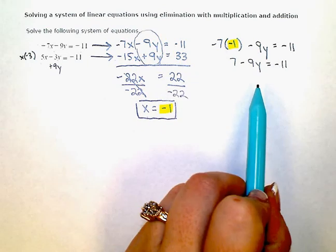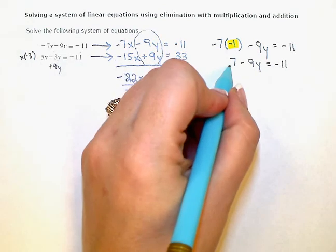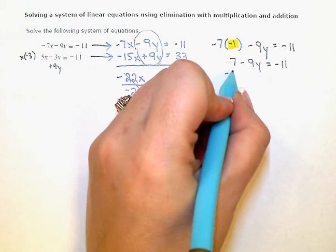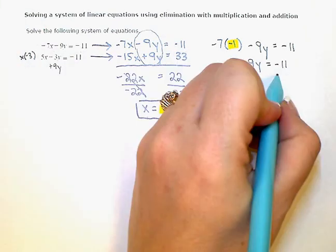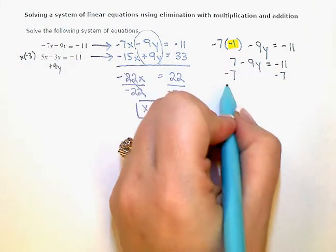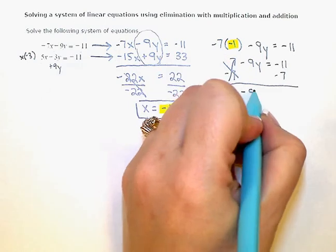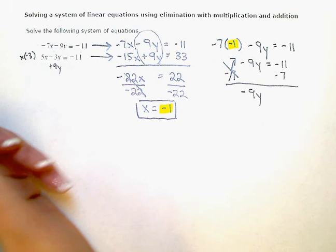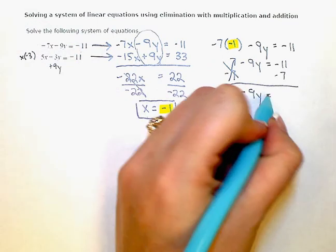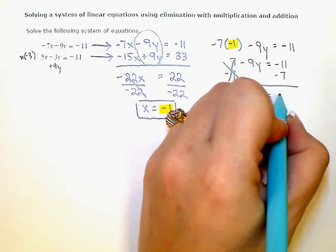Solving for y now, I'm going to eliminate this constant term or zero it out by subtracting 7, and then keep my equation balanced by doing the same thing on the other side. Then I simplify. Negative 9y equals negative 11 plus negative 7 is negative 18.